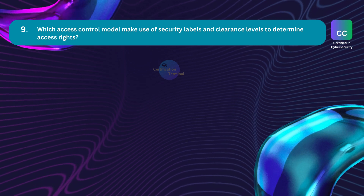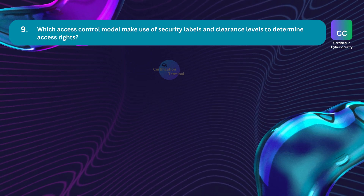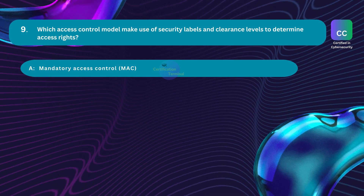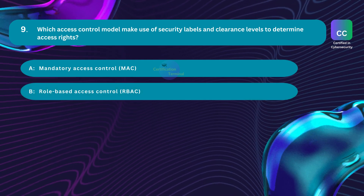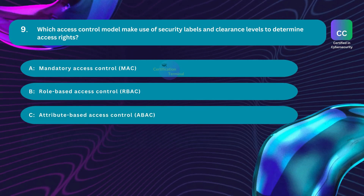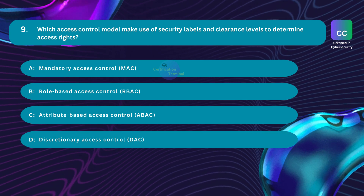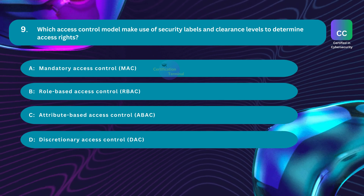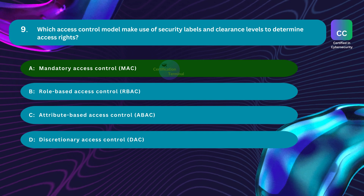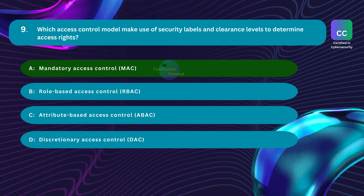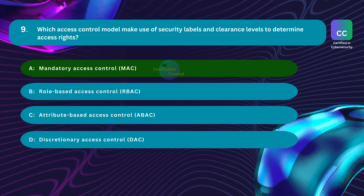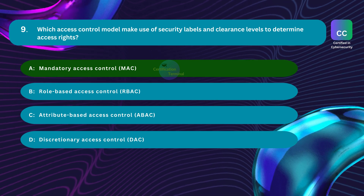Question number nine: Which access control model makes use of security labels and clearance levels to determine access rights? Option A: mandatory access control (MAC). Option B: role-based access control (RBAC). Option C: attribute-based access control (ABAC). Option D: discretionary access control (DAC). The correct answer is Option A: mandatory access control. In MAC, access rights are determined by security labels assigned to resources and the clearance levels of users. The system enforces access policies based on predefined rules, and users have limited control over their access permissions. Labels and clearances are often associated with sensitivity and classification levels.